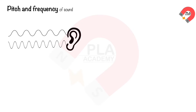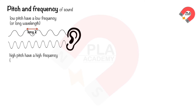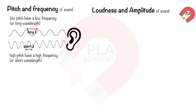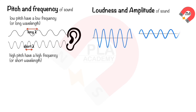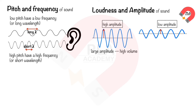Pitch and frequency of sound. The frequency of a sound wave is related to its pitch. Sounds with a low pitch have a low frequency or long wavelength; sounds with a high pitch have a high frequency or short wavelength. Loudness and amplitude of sound. The amplitude of a sound wave is related to its volume. Sounds with a large amplitude have a high volume; sounds with a small amplitude have a low volume.